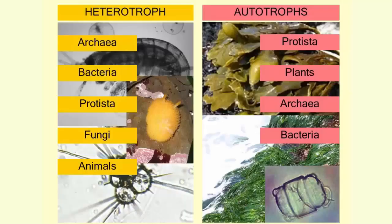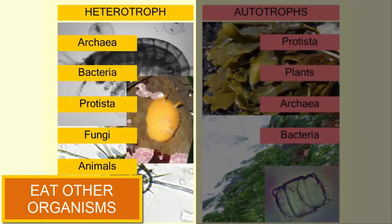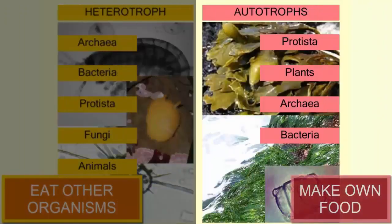All living organisms can be classified as autotrophs or heterotrophs. Heterotrophs acquire their food by eating other organisms. Autotrophs make their own food, usually through a process called photosynthesis.